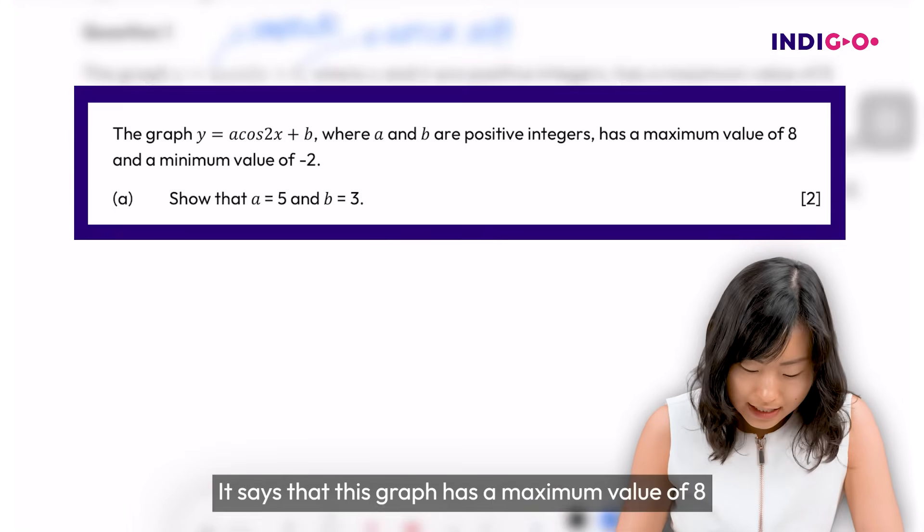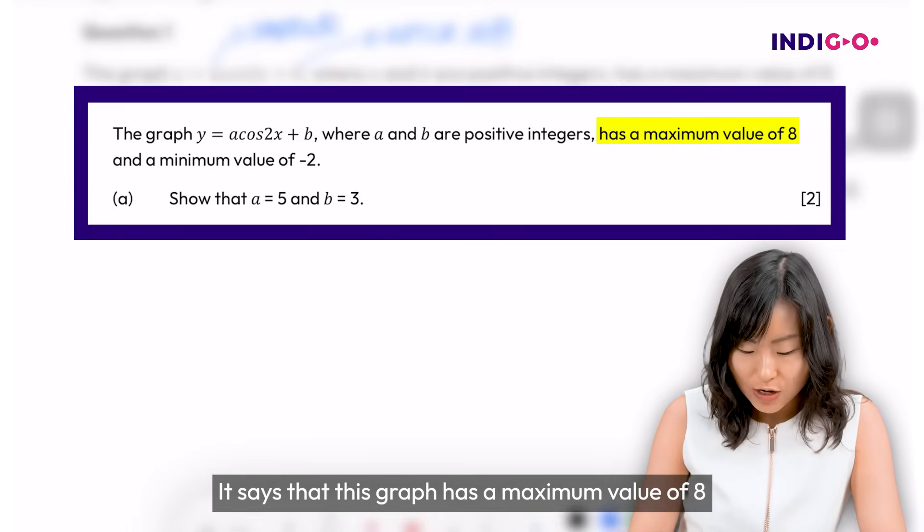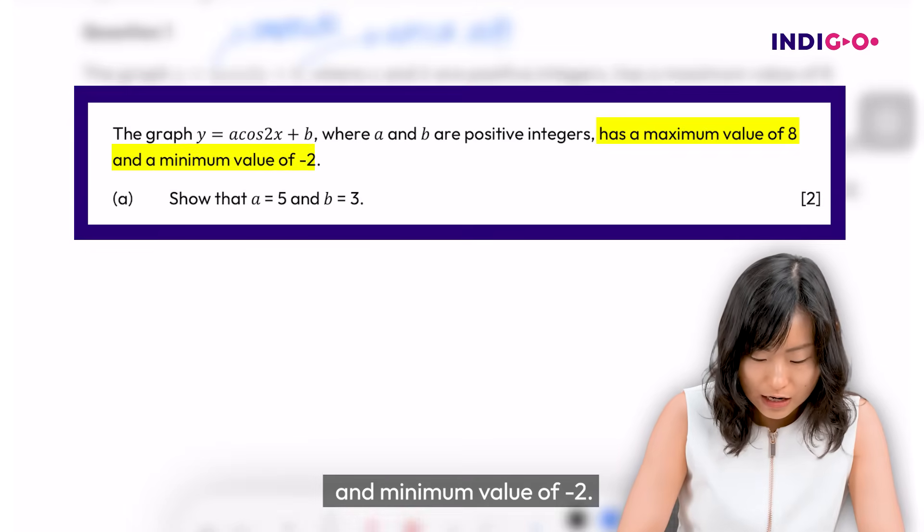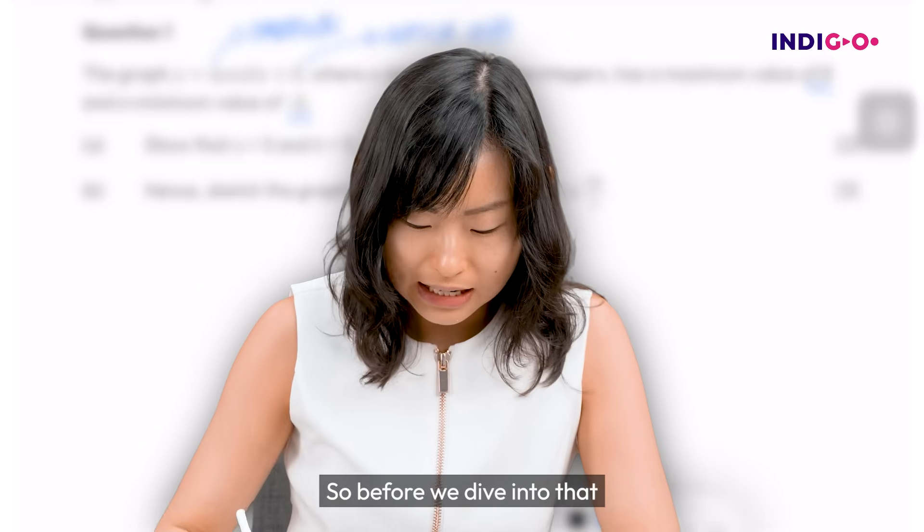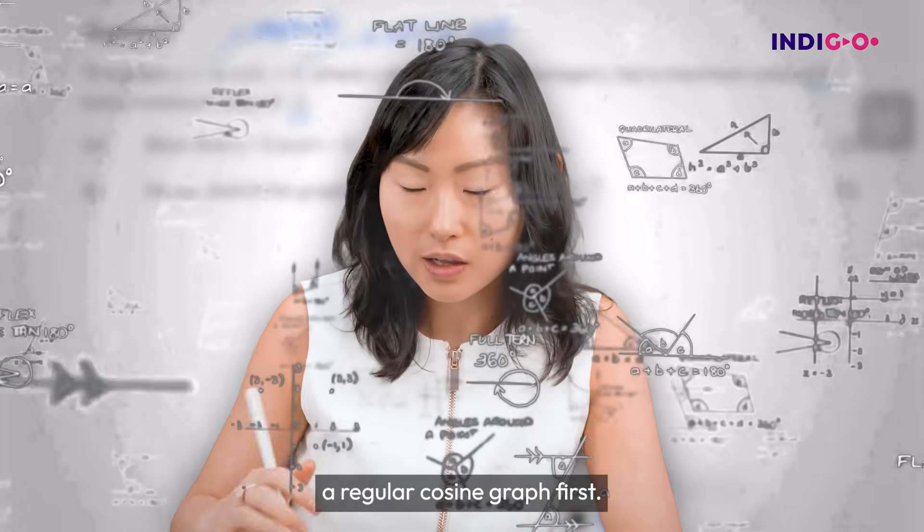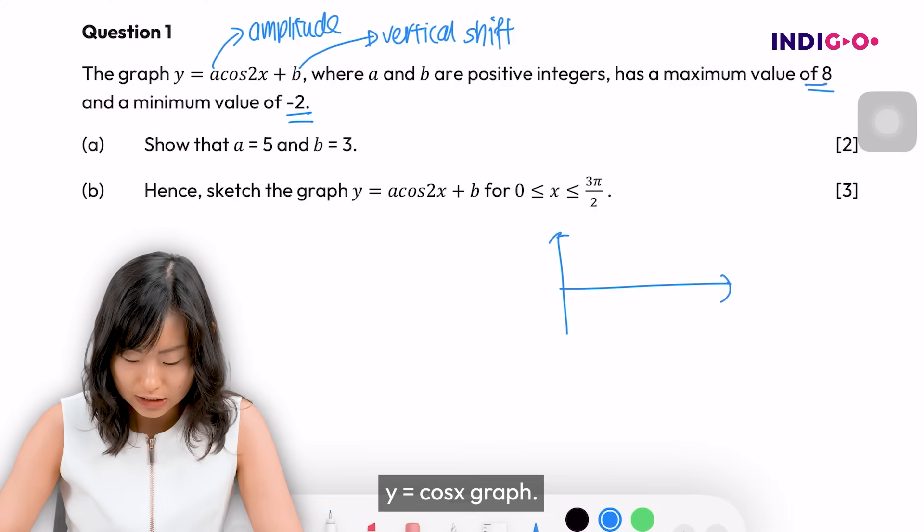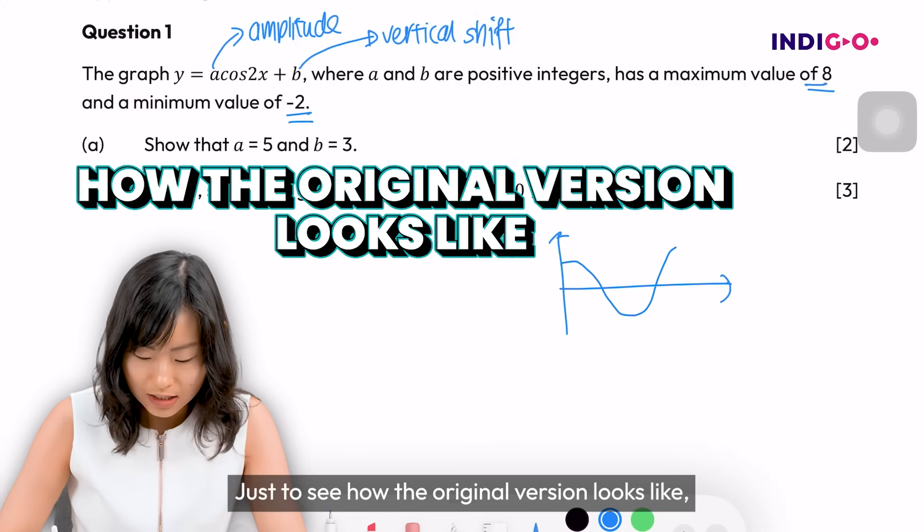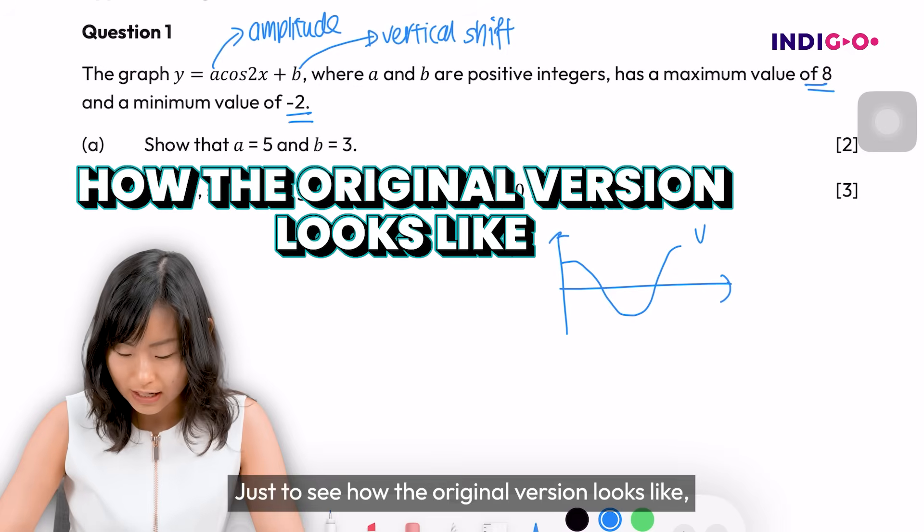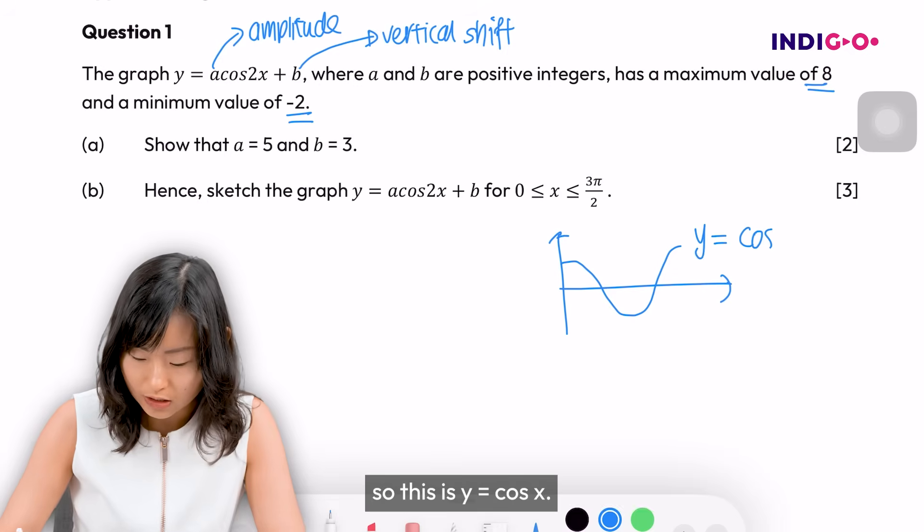Let's continue the question. It says that this graph has a maximum value of 8 and minimum value of minus 2. So before we dive into that, I'm just going to draw a regular cosine graph first. What do I mean by that? It's just going to be a y equals cos x graph, just to see how the original version looks like. So this is y equals cos of x.